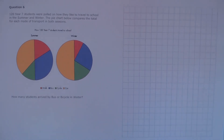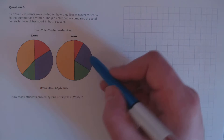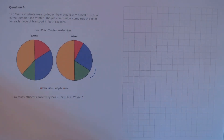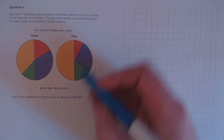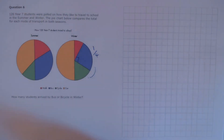Question 6. 120 Year 7 students were polled on how they liked to travel to school in the summer and winter. The pie chart below compares the total for each mode of transport in both seasons. How many students arrive by bus or bicycle in winter? We're looking at these two regions, and we need to know the total slice both of these occupy. Clearly, bus is a quarter, as it has a 90-degree angle.